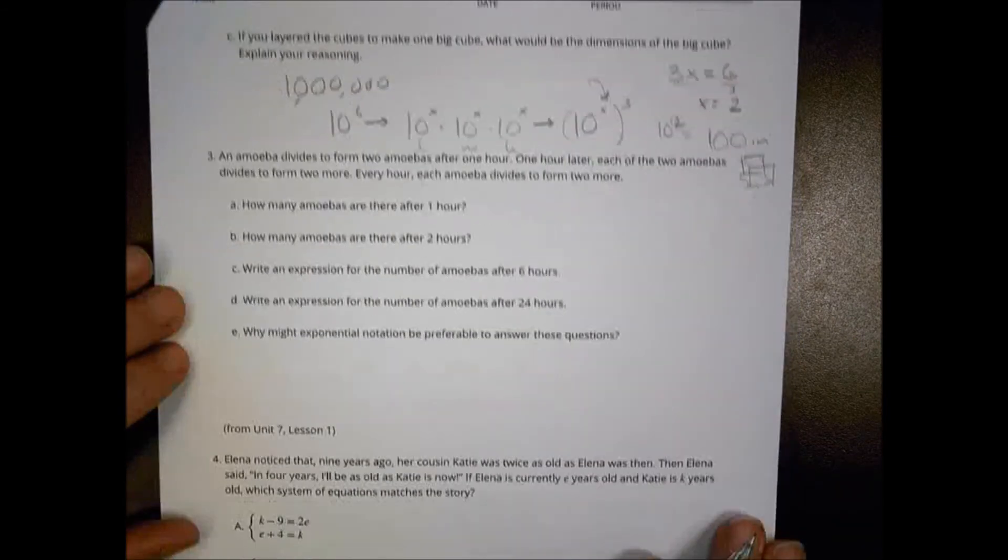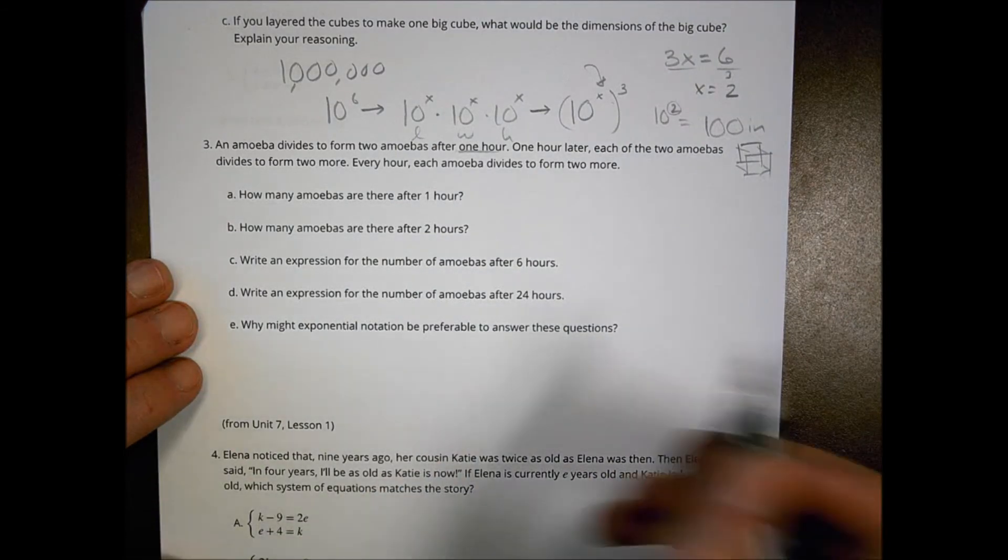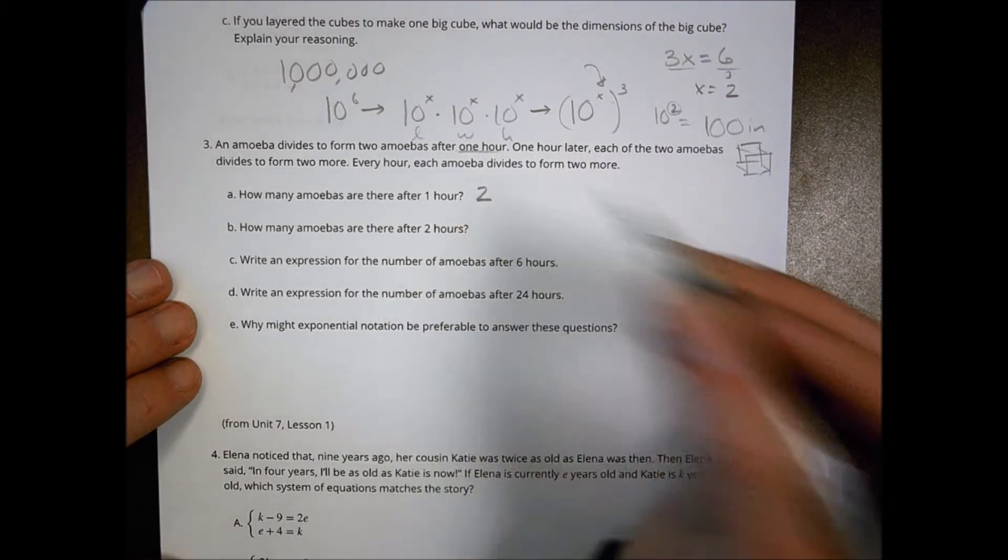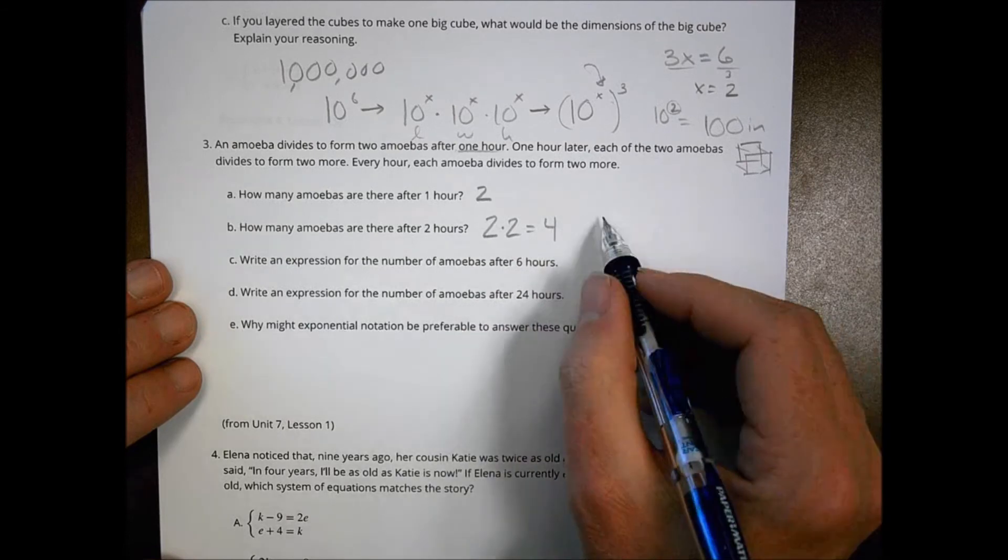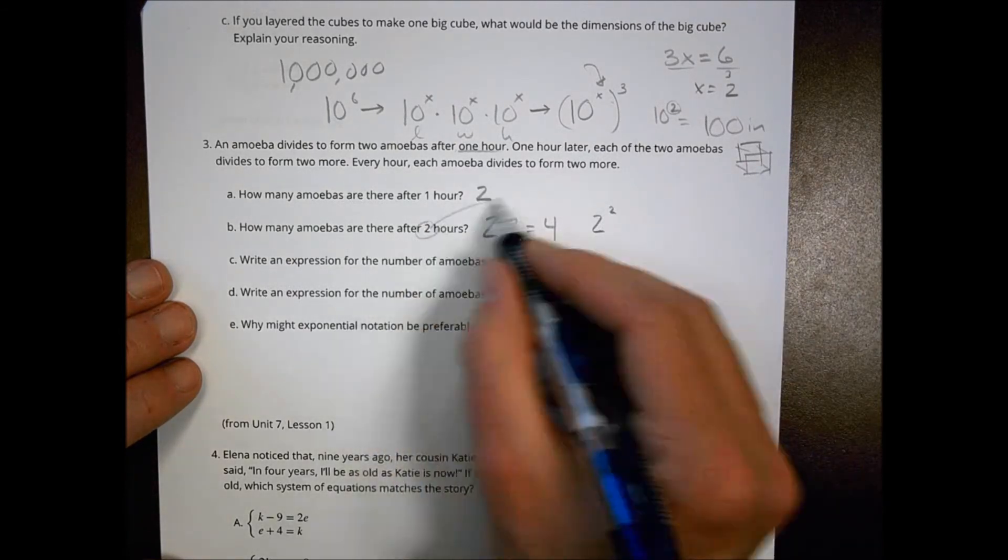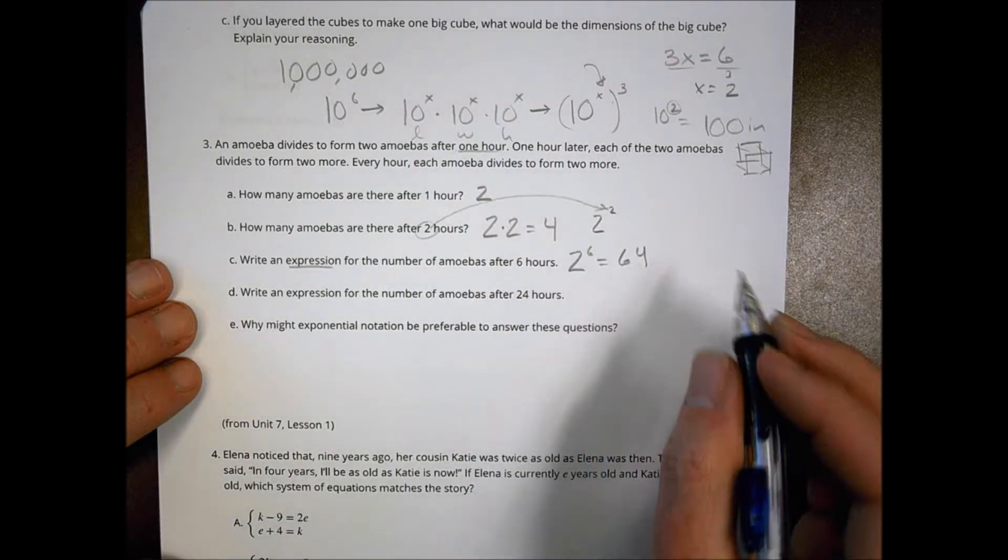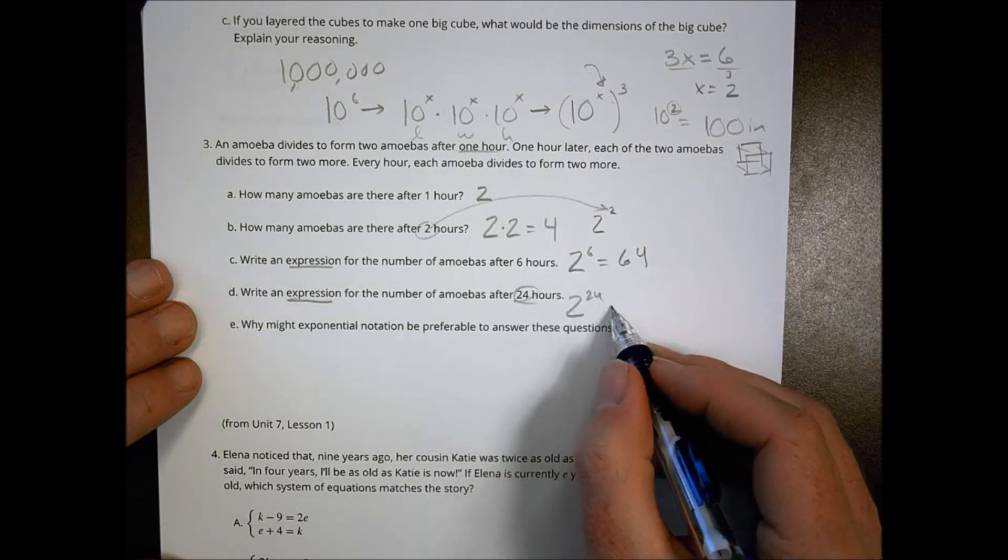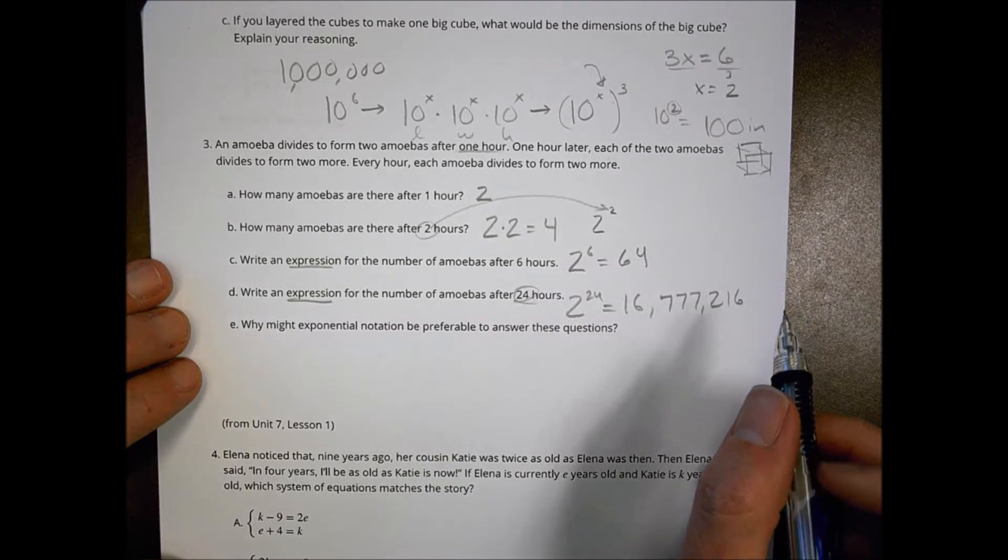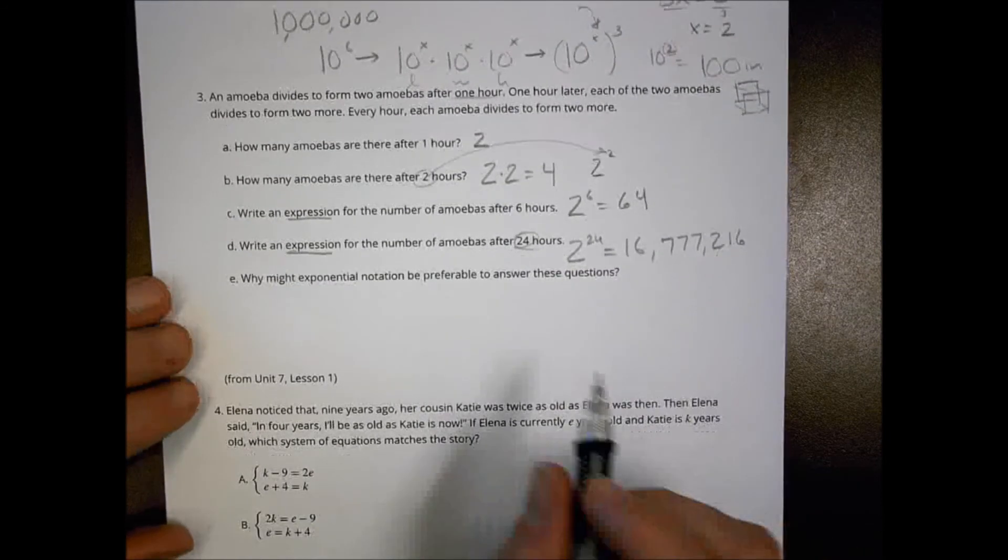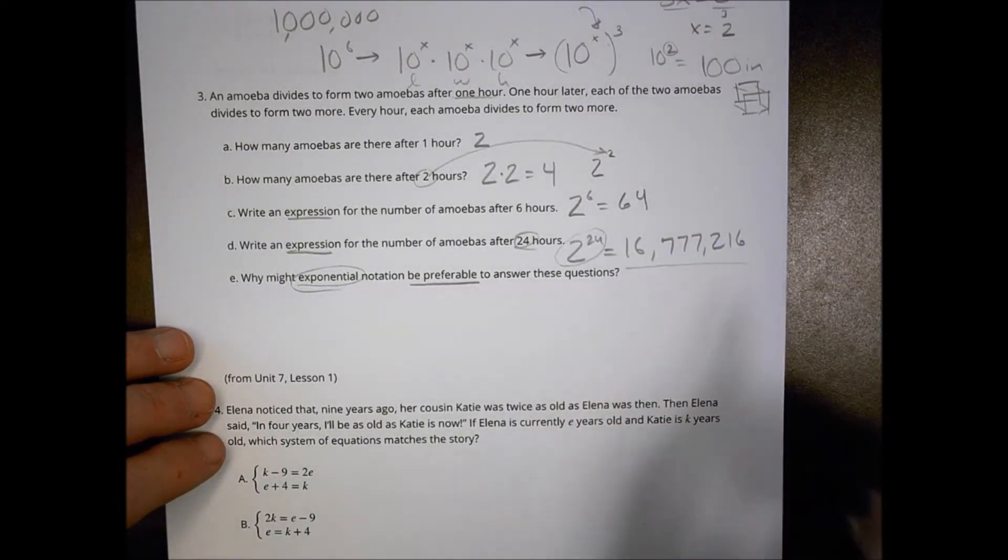Let's go to the next one. An amoeba divides to form two amoebas after one hour. One hour later, they form four. Every hour, it keeps dividing to form two more. How many are there after one hour? There are two. After two hours, this divides again, which means it's going to be multiplying by itself: two times two, which is four. That's two squared. So how about six hours? That would be two to the sixth power. If you solved it, you'd end up with 64. Expression for 24 hours: two to the 24th power. If you wanted to work that out, that's 16,777,216. So after one day, you got a whole lot more than the one you started with. Why might exponential notation be preferable to answer these questions? I'll let you figure that one out on your own.